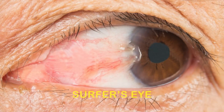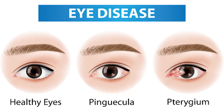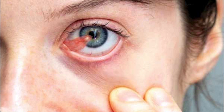Surfer's eye, or pterygium, is a raised, fleshy, triangular-shaped growth on your eye's conjunctiva. Your conjunctiva is the clear membrane that covers the white of your eye. The conjunctiva normally ends at the clear part of your eye, the cornea.